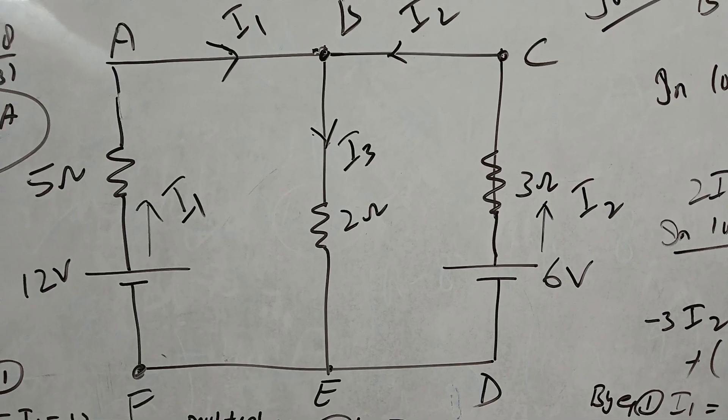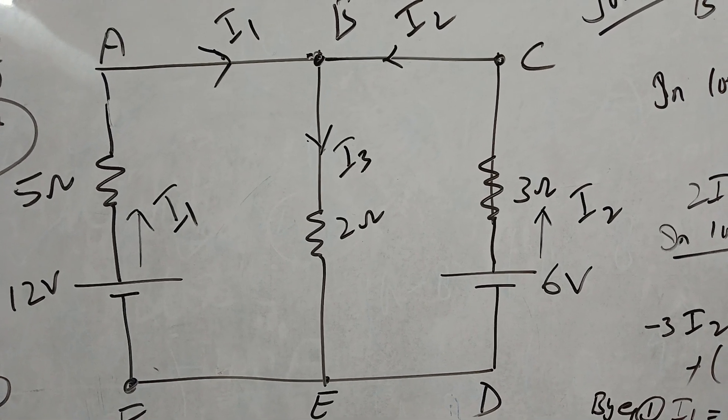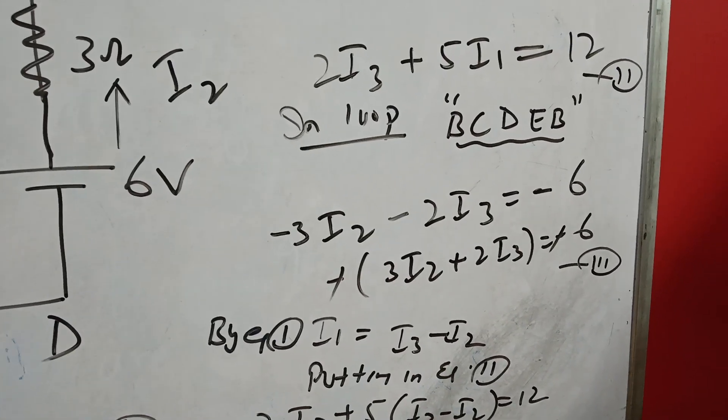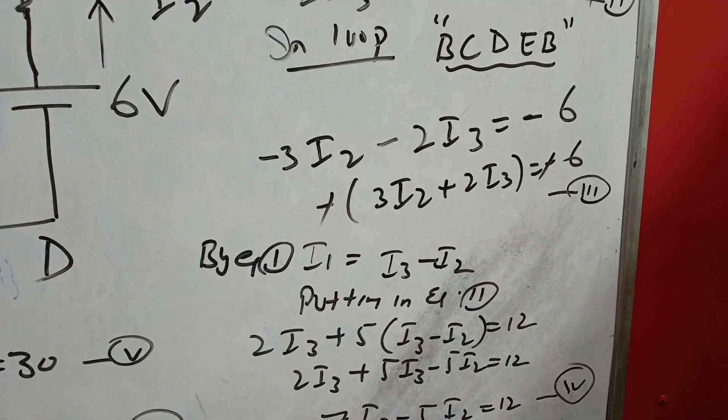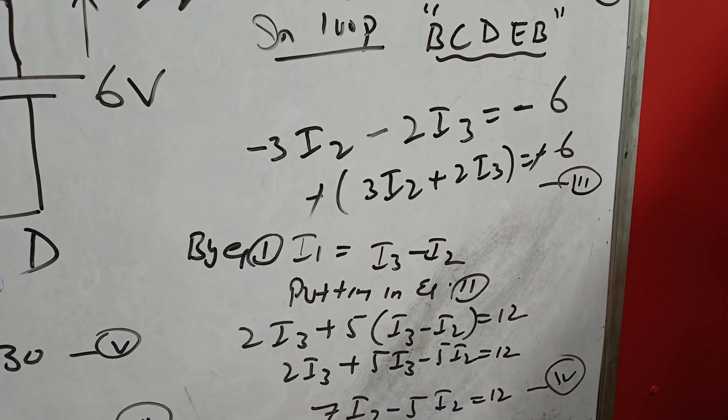So 2I3 will also be minus, and looking at 6V, that should be negative. So we can write minus 3I2 minus 2I3 equals minus 6. Taking minus as common, we will get 3I2 plus 2I3 equals 6.